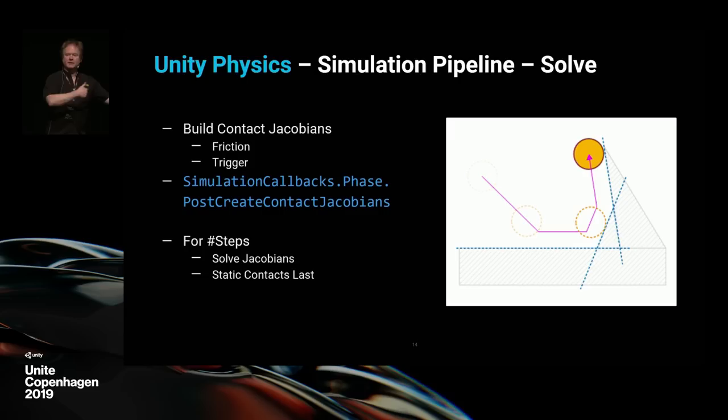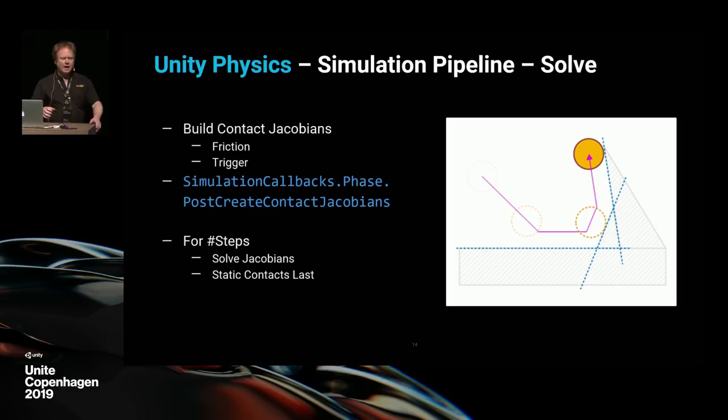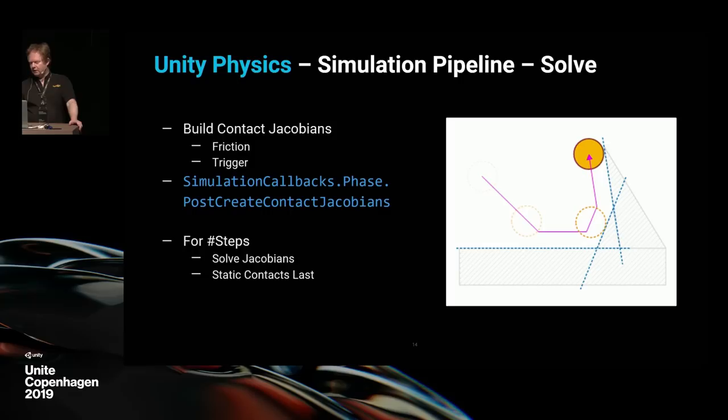Another idea is a soft contact — you could allow the collision response to be slightly less than it would be naturally. Another example is a conveyor belt: you don't actually want a moving conveyor belt in the scene if you can avoid it. With a static box, you can fake a surface velocity at this point in the simulation flow — grab the contact Jacobians for that conveyor belt object and pretend there is an actual surface velocity. Finally, we solve all those Jacobians. It's worth highlighting that we solve static contacts last, so dynamic-dynamic overlaps are processed first, then static overlaps with dynamic objects.